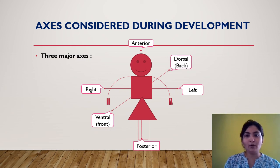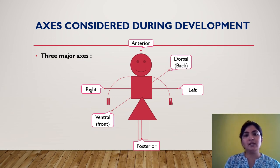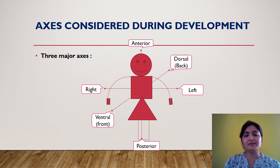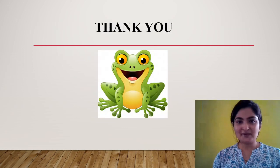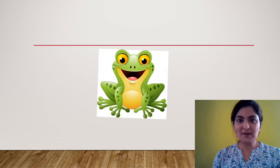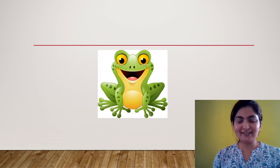For some organisms like Drosophila, the anterior-posterior axis is established even before fertilization. For most animals, these axes are established after fertilization. For some animals like frog, a specific event — for example the point of sperm entry — plays a very important role in axis formation. With this I conclude today's session. Thank you so much for your patient listening. Please do not forget to like and share.